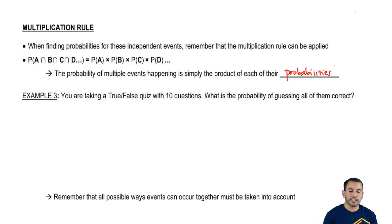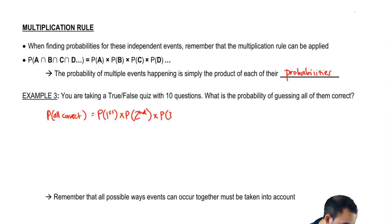Let's try this out. You're taking a true-false quiz with 10 questions. What's the probability of guessing all of them correct? You have to think to yourself, what's the probability of me getting the first one correct? Probability of all correct is the probability of the first being correct, times the second times the third, all the way to the probability of the tenth one being correct.